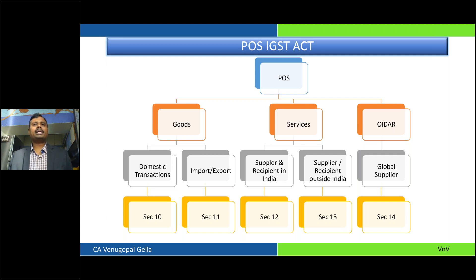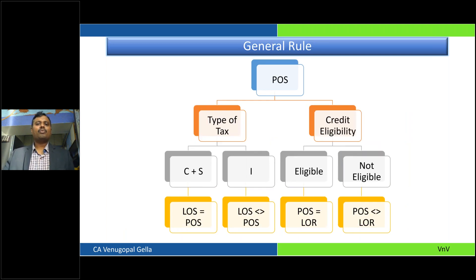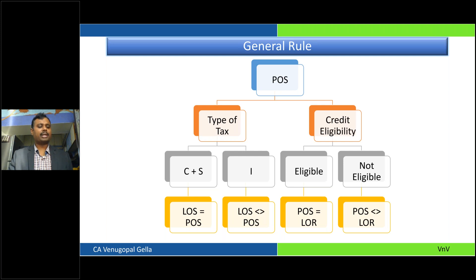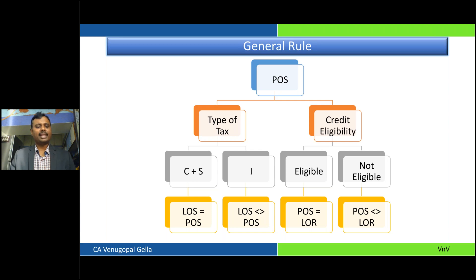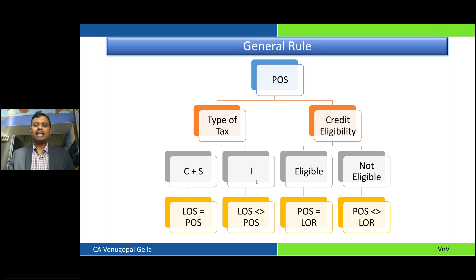Place of supply is going to determine the nature of taxes one would be levying. If the place of supply is the same as the location of the supplier, then the type of tax one has to charge is CGST plus SGST (or UTGST). But if the location of supplier and the place of supply are different, the tax one needs to charge is IGST. For the credit to be eligible, wherever the location of the recipient is, the place of supply should also be the same state.